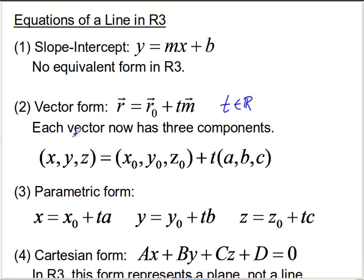The biggest difference here is that because we're in R3, our position vector is now a three-dimensional position, so we have to include now a z component. Our initial position has to have an initial z component, and our direction vector is made up of an x, y, and z component.